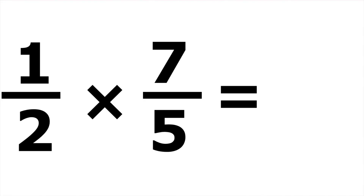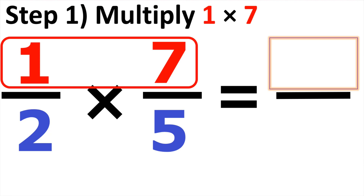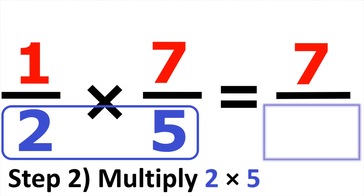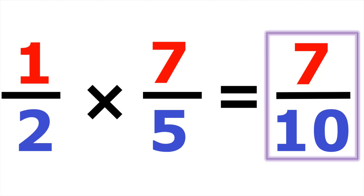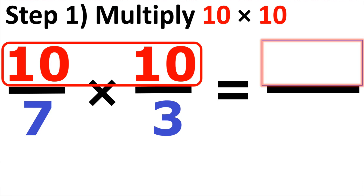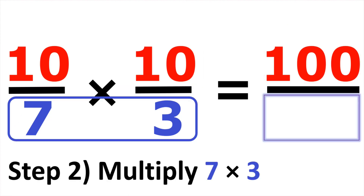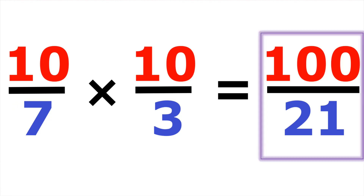Example number twenty-two, we have one-half times seven over five. Up top, one times seven gives us seven. At the bottom, two times five gives us ten. So the answer is seven over ten. Number twenty-three, we have ten over seven times ten over three. Ten times ten is equal to one hundred. At the bottom, seven times three gives us twenty-one. So the answer is one hundred over twenty-one.